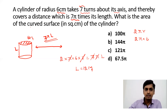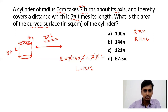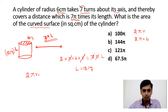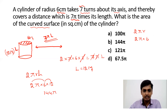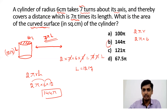Now we can find the curved surface area: CSA = 2πrh = 2 × π × 6 × 12. That is 2 × 72 × π = 144π cm². So 144π is the curved surface area of the cylinder, and this becomes our answer.